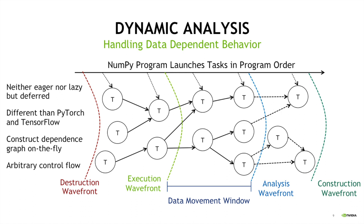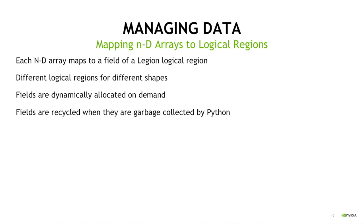This deferred model gives us important advantages for NumPy. We can construct the task graph on the fly, allowing us to deal with arbitrary control flow — branches and dependent control flow that may depend on data values — much more effectively. Additionally, the graph never gets so big that we can't store it in memory. There's a sliding window of how big the graph is, sized by the runtime system to adapt to your program, so we never run out of memory trying to represent it.